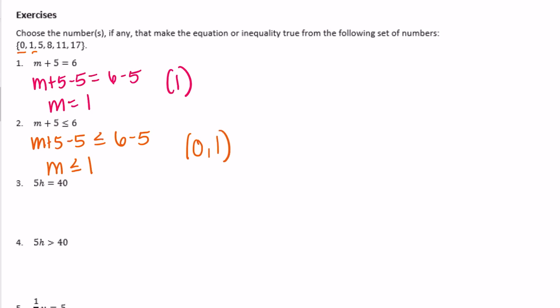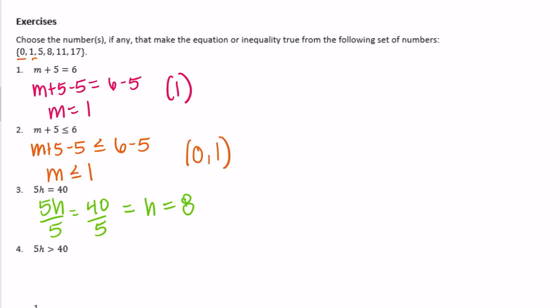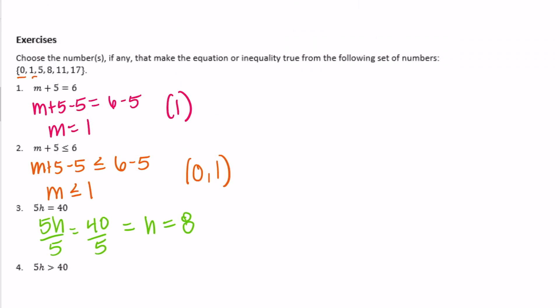Exercise 3: 5h equals 40. Dividing both sides by 5: h equals 40 divided by 5, which is 8. So h must equal 8. We do have an 8 in our set, so 8 is the only value that makes that true.